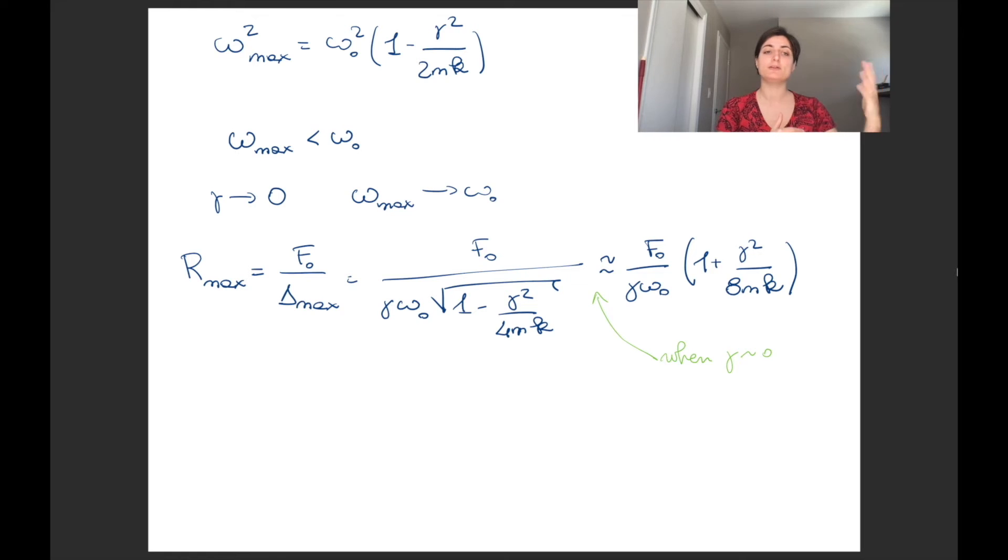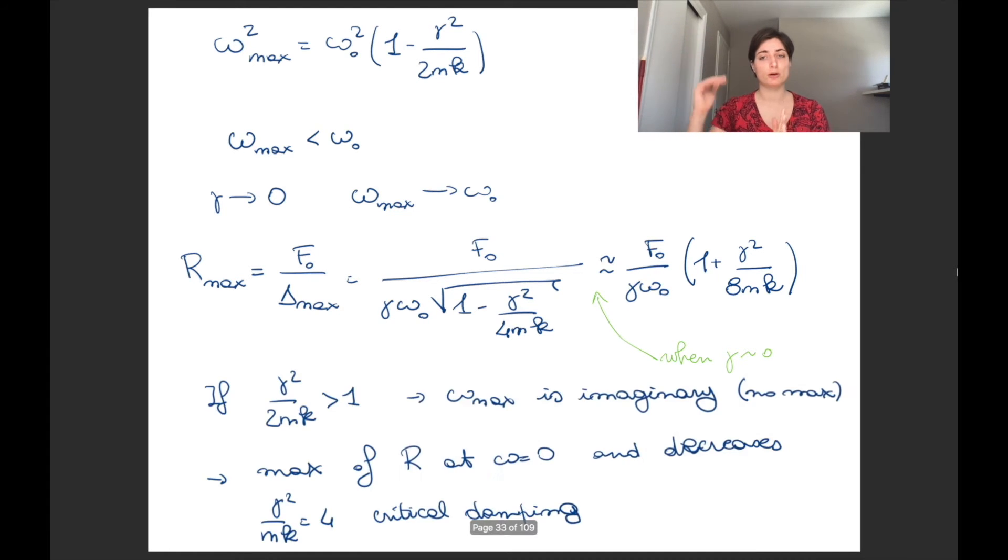What is the amplitude of the forced response when you choose as the frequency of the forcing term exactly omega_max? Well that is R_max that is equal to f_zero divided delta_max. And we can do the calculations and that becomes f_zero divided gamma omega_zero times square root of (1 - gamma^2/4mk). For gamma tending roughly to zero, we can simplify our R_max for gamma very small to be almost f_zero divided by gamma omega_zero times (1 + gamma^2/8mk).